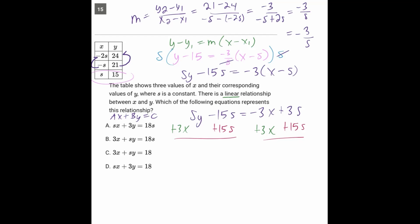So on the left hand side, we're going to have 3x plus sy. This canceled, this also canceled. So we'll have on the other side 18s. And believe it or not, what we have here perfectly matches answer choice B for number 15.